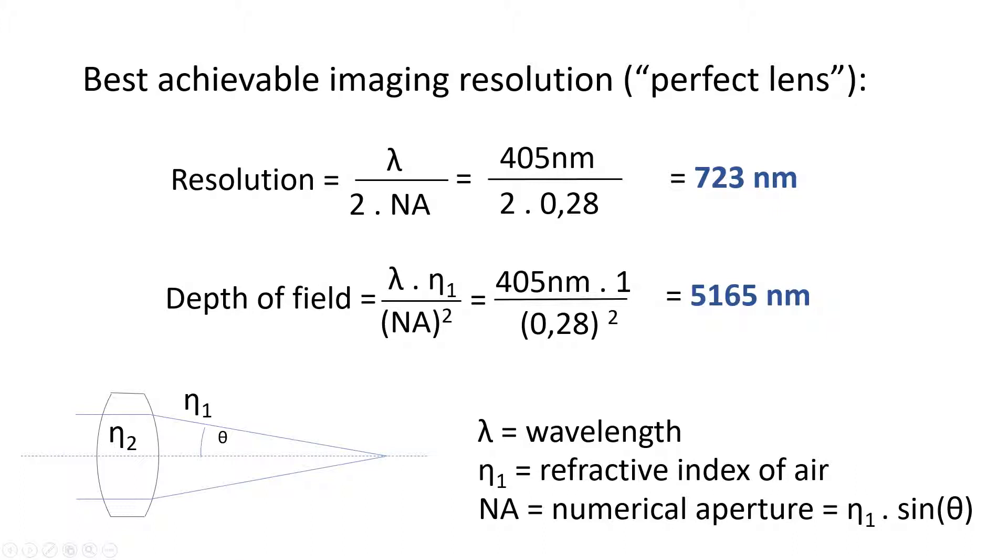If we use the Rayleigh limit as the maximum resolution, we can calculate the value for a perfect lens. The value is dependent on wavelength and numerical aperture. But if you fill in the wavelength of 405 nm and you use the numerical aperture of 0.28, the values of the Carl Zeiss lens, we find the following values. Resolution limit is 0.7 microns approximately. In addition we can also calculate the depth of focus, which is approximately 5 microns. So the latter means that you should focus within plus or minus 2.5 microns in order to achieve the maximum resolution.